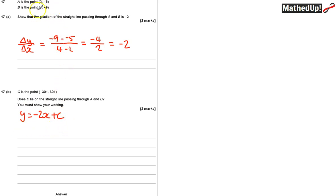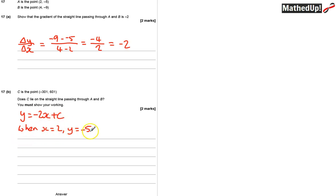I'm going to use one of these points to work out what C is. When X is 2, Y is equal to negative 5. I can substitute that into the equation to work out C. So: negative 5 is equal to negative 2 times 2, which is negative 4, plus C. Therefore, if I add 4 to both sides, negative 5 plus 4 is negative 1, so C is equal to negative 1.